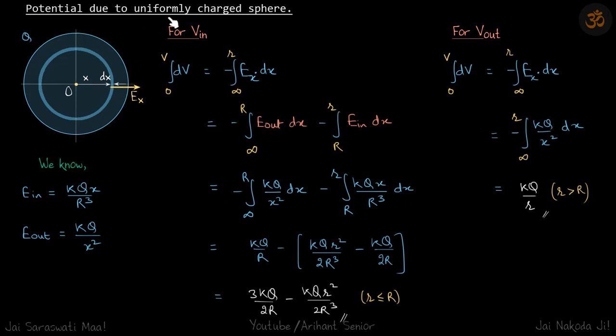So potential due to a uniformly charged sphere. We have a uniformly charged sphere and let's say at a distance x we will consider a small ring of it dx. This ring is inside the sphere so let's find the potential inside the sphere first.